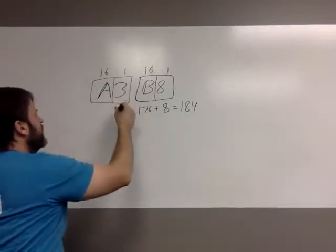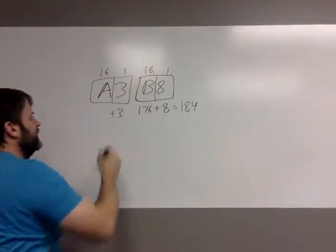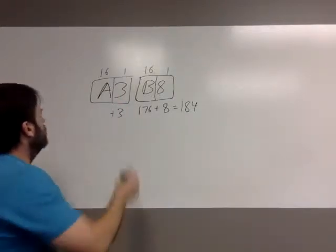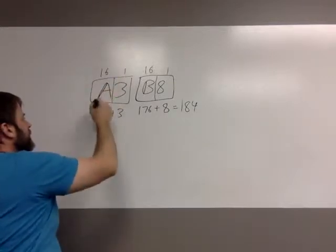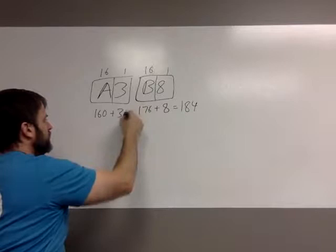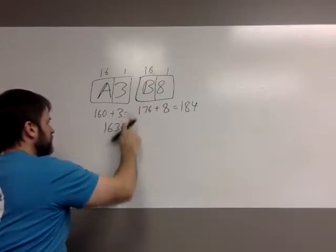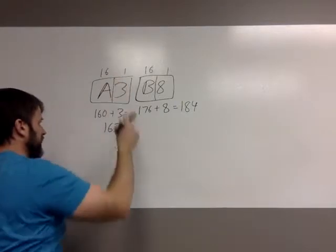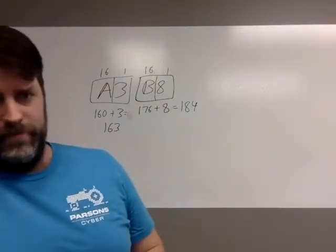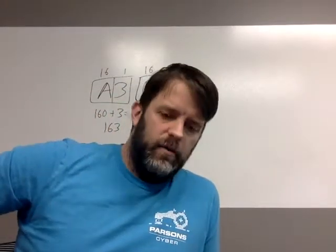This next one — same thing. It's A3. A, like we said, is 10. Fortunately, I can multiply 10s in my head pretty easily — probably so can you. 16 times 10 is 160. 160 plus 3 is 163. So 163 is the value of this byte, and 184 is the value of the other byte. That's how you calculate the value of a single byte with hexadecimal.